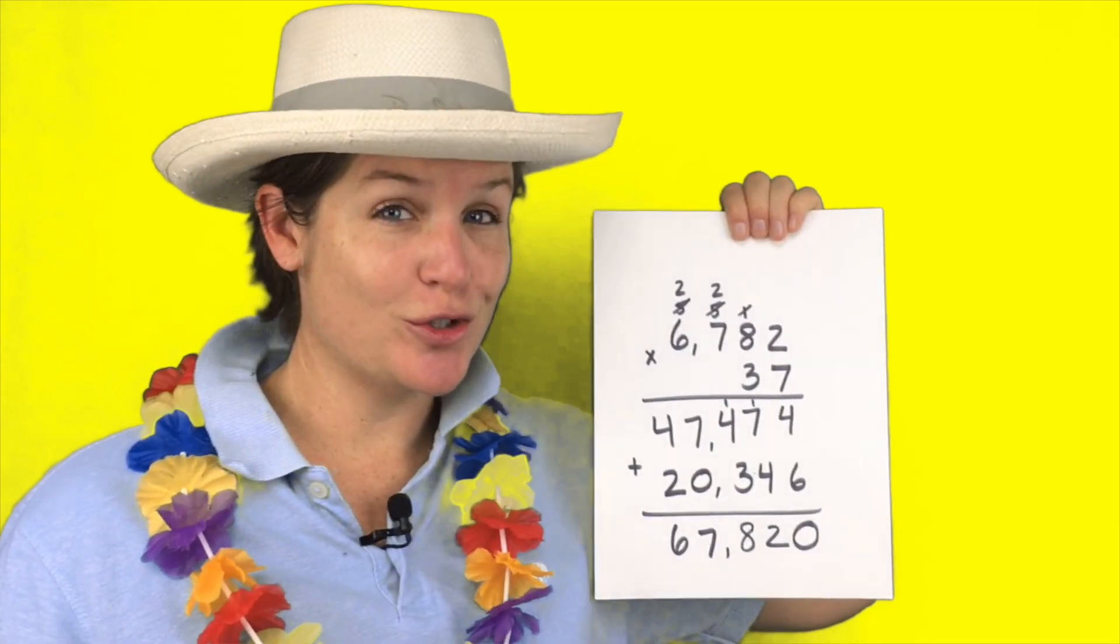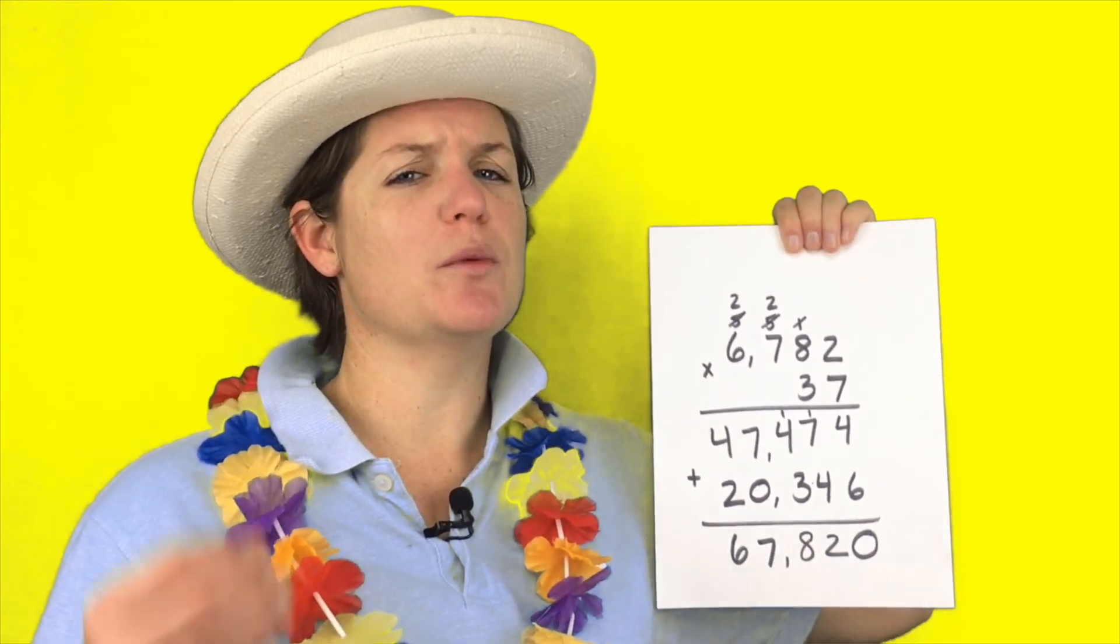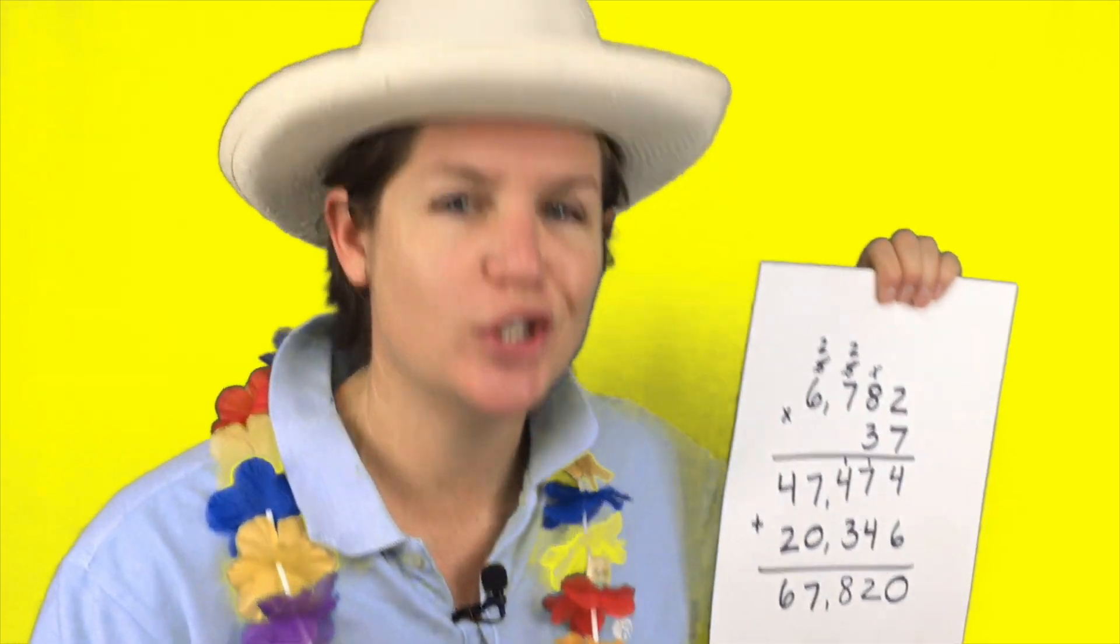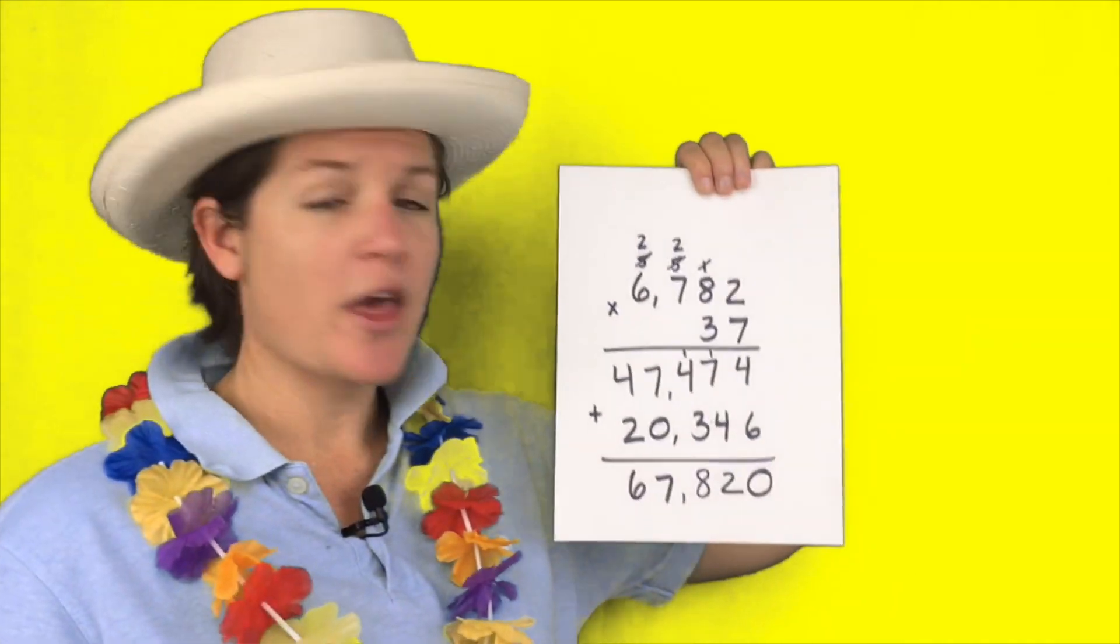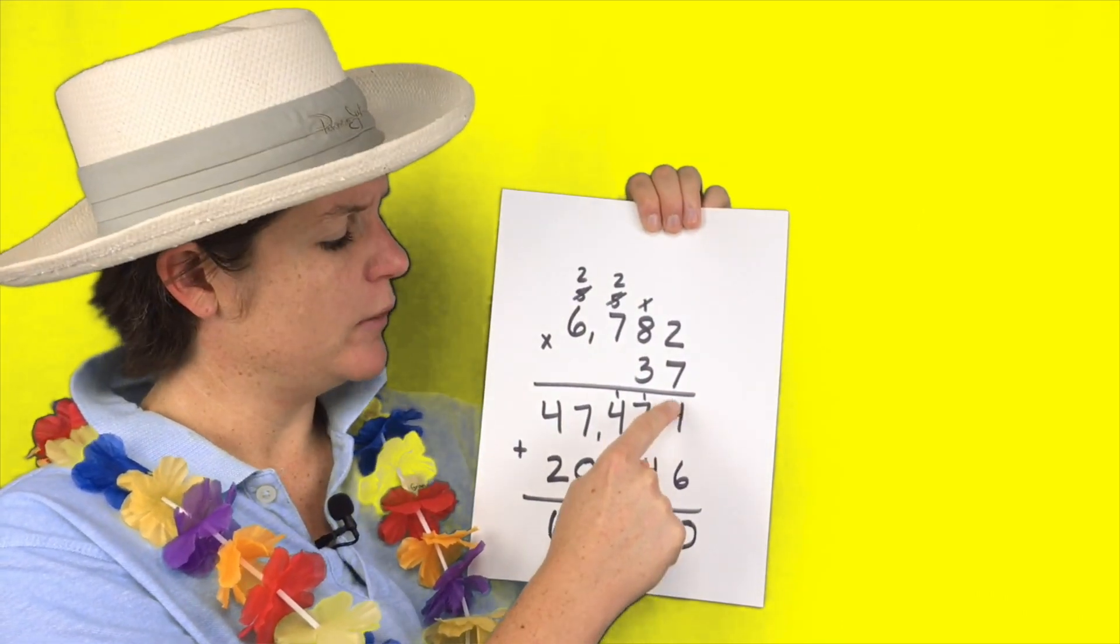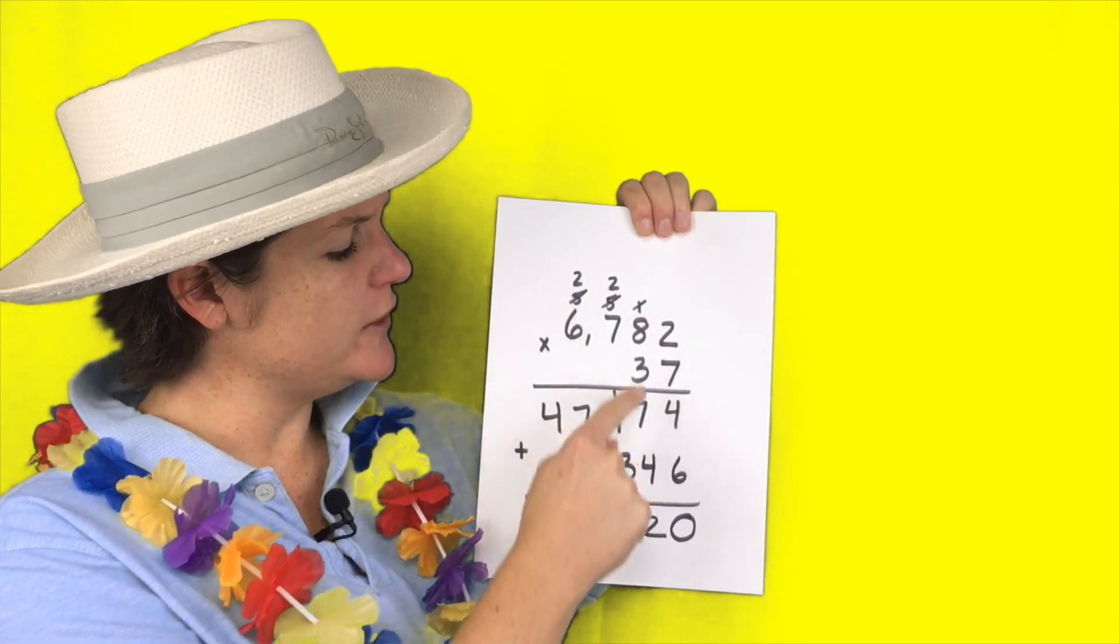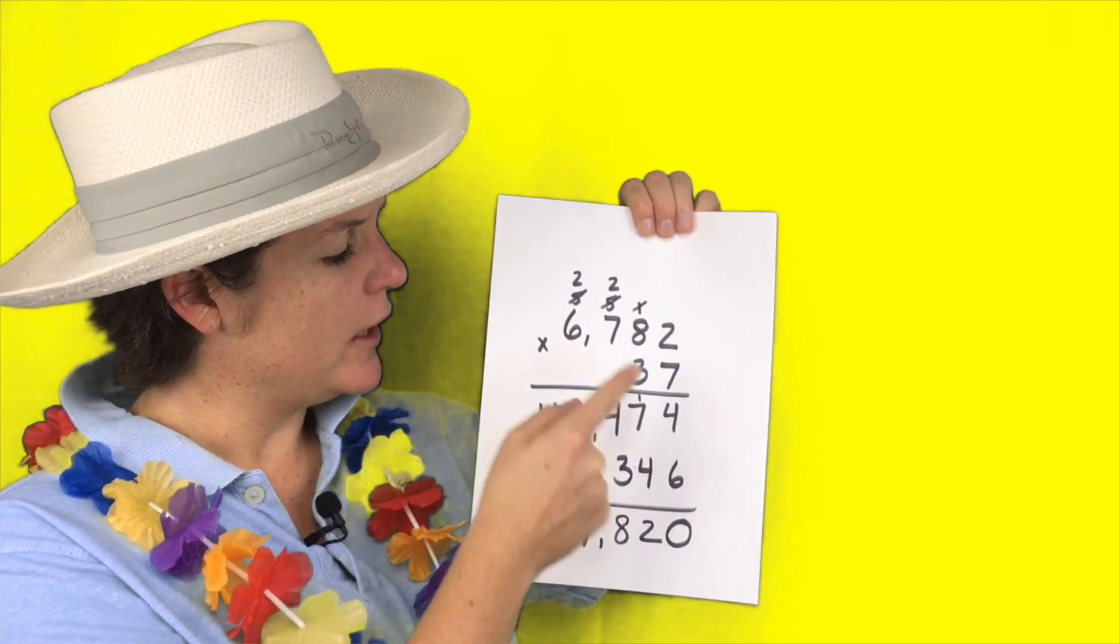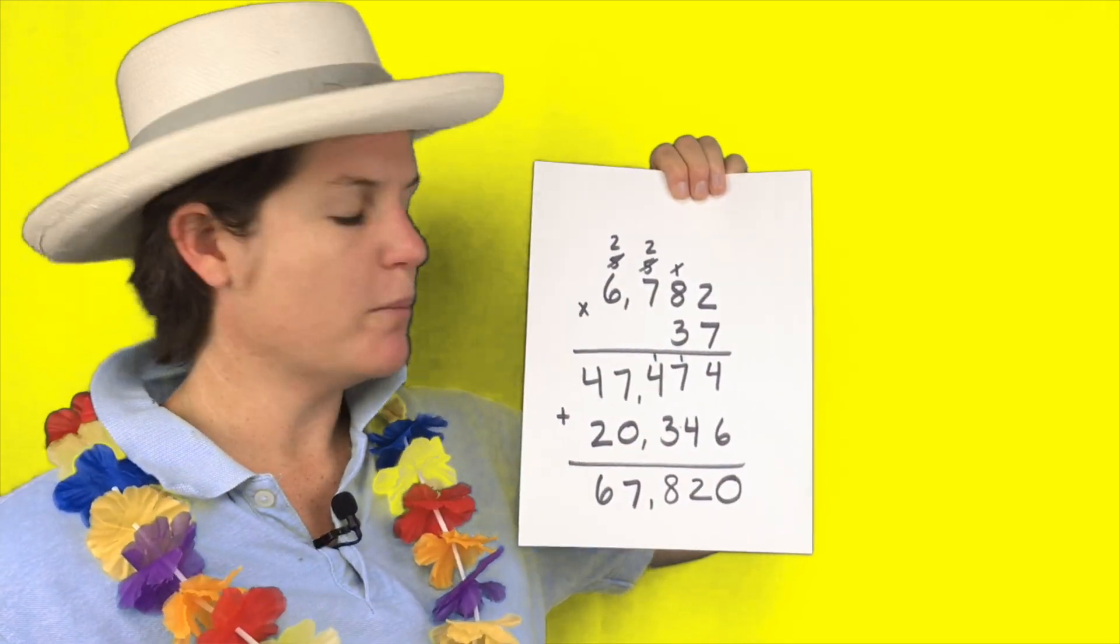I use multiplication to solve this problem because we knew the number of customers and we knew how much they were charging each month. We're trying to find the total, so multiplication is key. Here is what I did. I lined the digits up just so. Then here's how I solved it. 2 times 7 is 14. Bring down the 4, carry the 1. 7 times 8 plus 1 is 57. 7 times 7 plus 5 is 54. 7 times 6 plus 5 is 47.